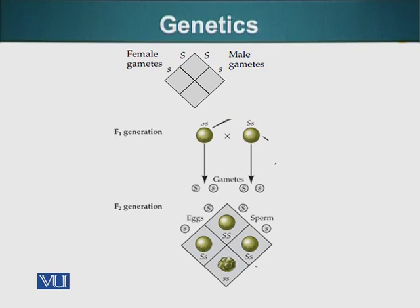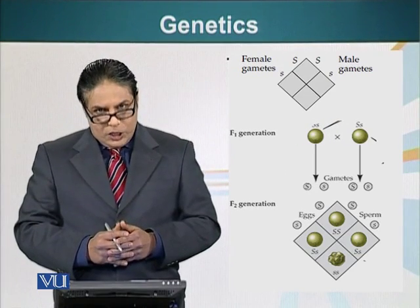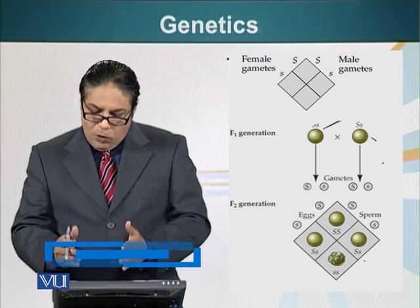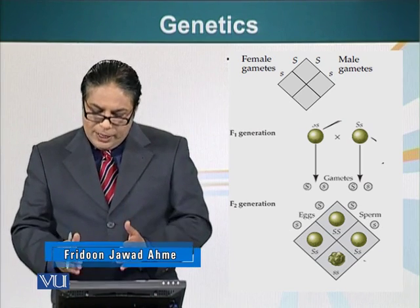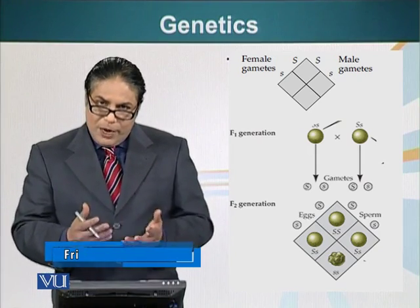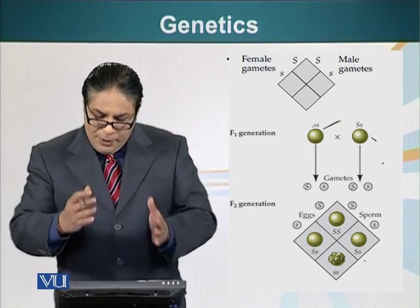We can also summarize this in a simpler way using a Punnett square, displayed on the screen. We write male gametes on one side of the square and female gametes on the other side, then see what different combinations we can make. When we cross capital S small s with capital S small s, these traits will separate — that was the objective of Mendel's experiment: to see whether the genetic units separated or not.